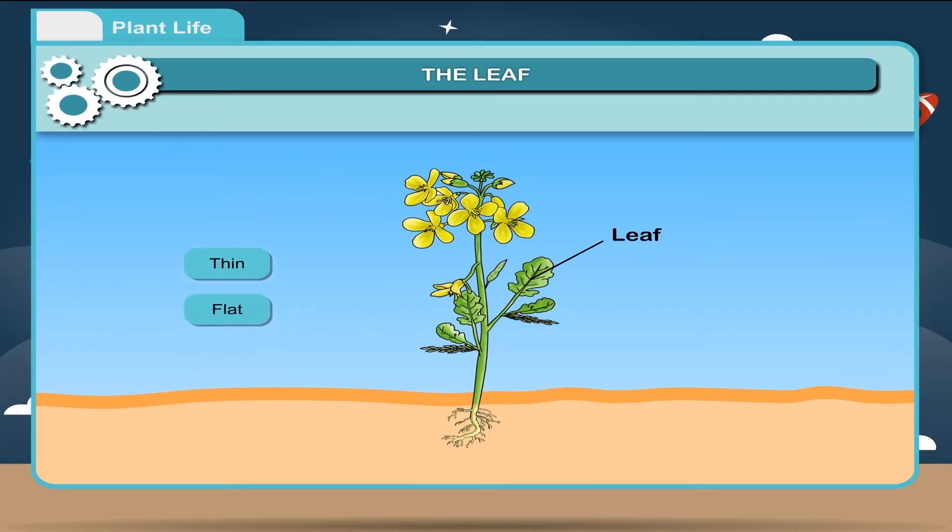It is thin, flat, green, expanded structure which is concerned with the manufacture of food. It arises from the node of the stem and has a bud called axillary bud in its axle.